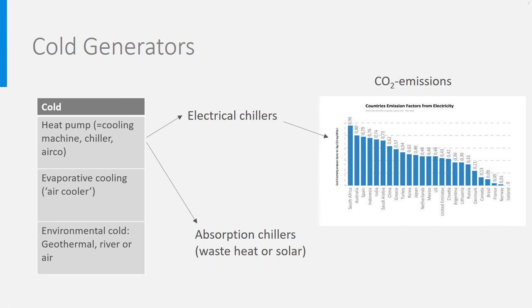Let's look at the cold generators now. You remember that there are only three of them: chillers that are nothing else than heat pumps, evaporative cooling, and environmental cold. Evaporative cooling was addressed extensively in other lectures. Both evaporative cooling and environmental cold can be considered carbon-free and resource depletion-free systems. There is only a bit of pump energy needed that is generally neglected in calculations.